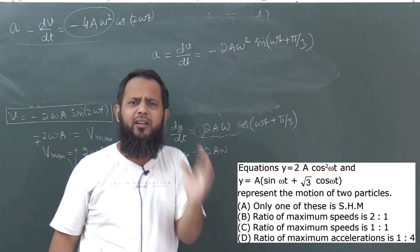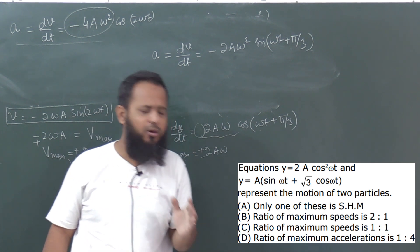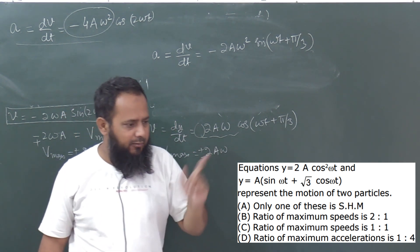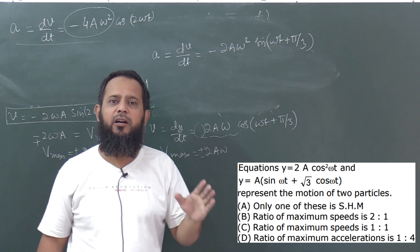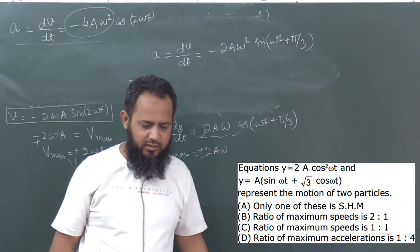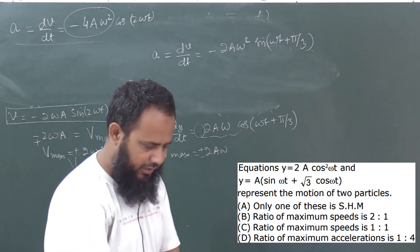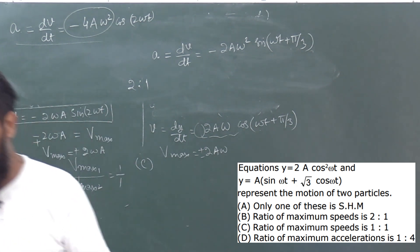So the answer is: both equations represent SHM, ratio of maximum speeds is 1:1, and ratio of maximum accelerations is 2:1. Thank you very much.